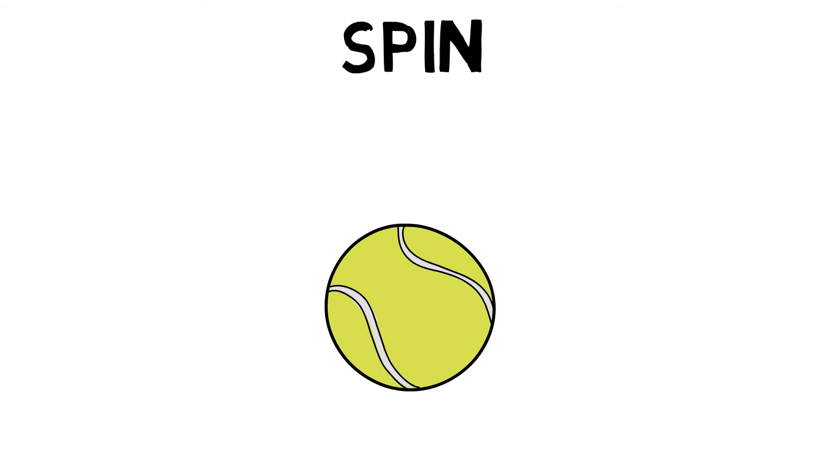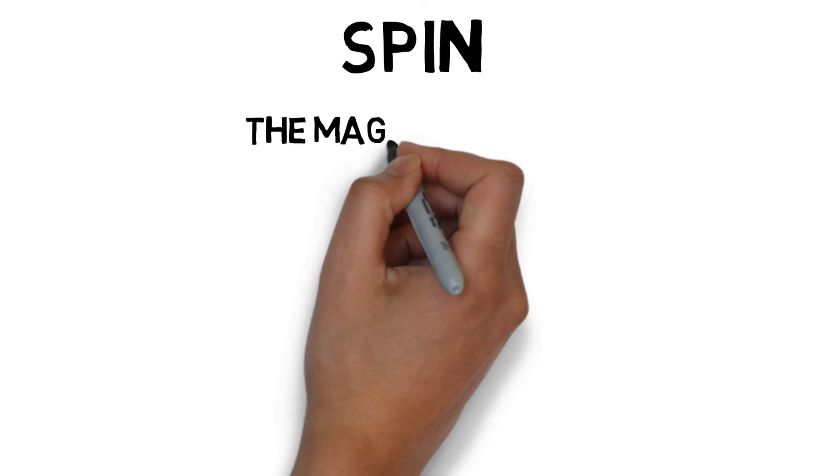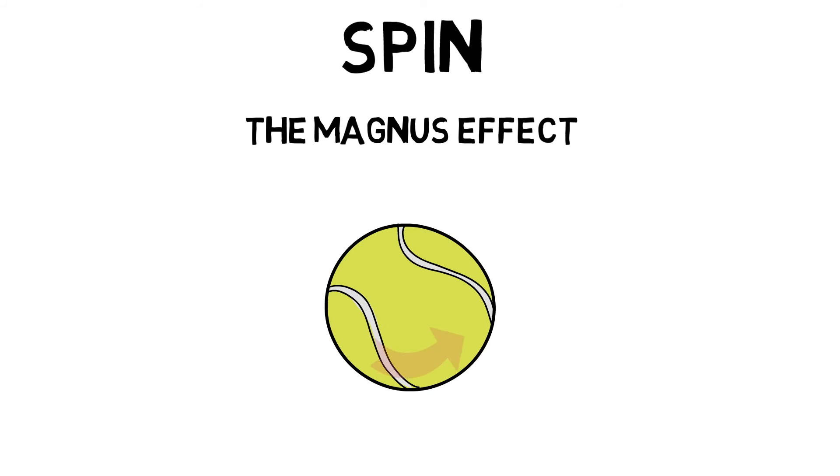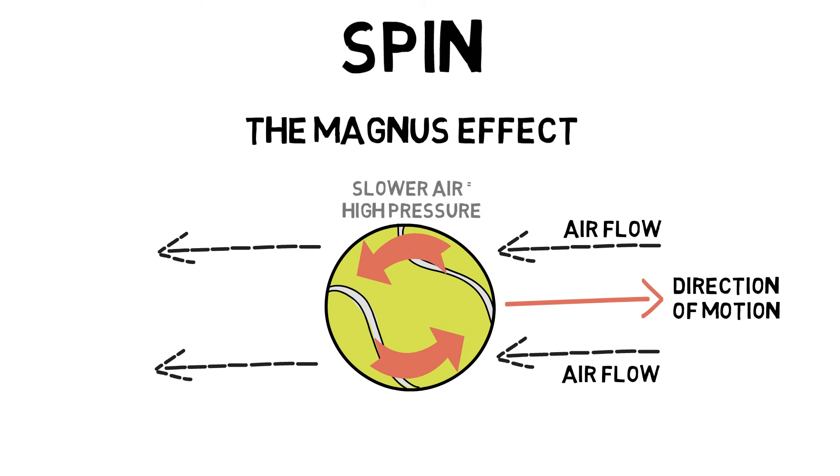Spin is created by applying a force which is off centre to the object being thrown or kicked at the point of release. The Magnus effect applies to the spin on the ball that slows down air flow on one side of the object and speeds it up on the other side. This creates a pressure difference that causes the ball to move.